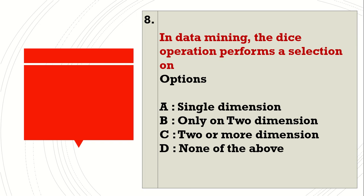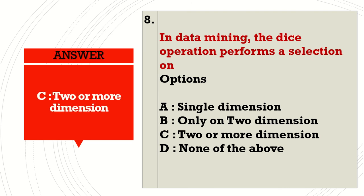In data mining, the dice operation performs a selection on Dash. Options: A. Single Dimension, B. Only on 2 Dimension, C. Two or more Dimension, D. None of the above. Answer: Two or more Dimension.